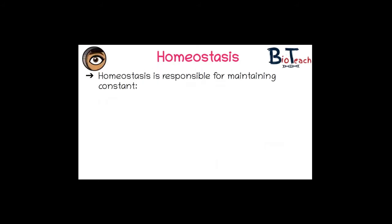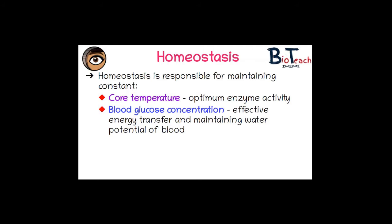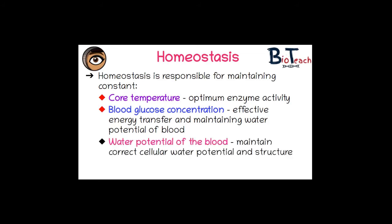Homeostasis is responsible for maintaining things like constant body temperature. For example, when your body is in activity it's going to have increased heat generation. We don't want to increase the temperature too much because that's going to affect enzyme activity and the rate at which enzymes and substrates collide and create our metabolic rate. Similarly, we have to regulate blood glucose concentration and also levels of pH, which is an important one. And lastly, we also look at the control of the water potential of the blood, maintaining the correct water potential so that our cells don't shrink or swell and become damaged.